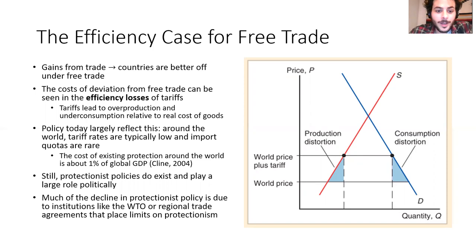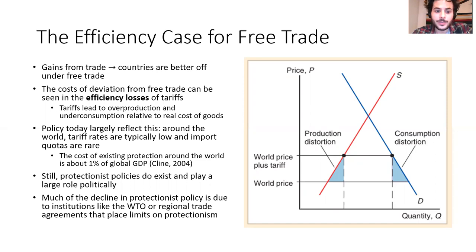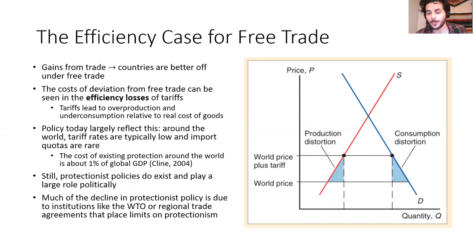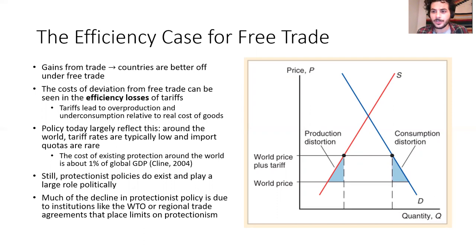Still, protectionist policies do exist. They play an outsized role politically. Much of the decline in protectionism is due to institutions like the World Trade Organization or regional trade agreements that place limits on the protectionist policies countries can actually implement. So clearly there's a latent demand for protectionism — something that governments, if left to their own devices, would like to do more of sometimes. And the question is: what are the justifications? Why are governments so interested in protectionism?